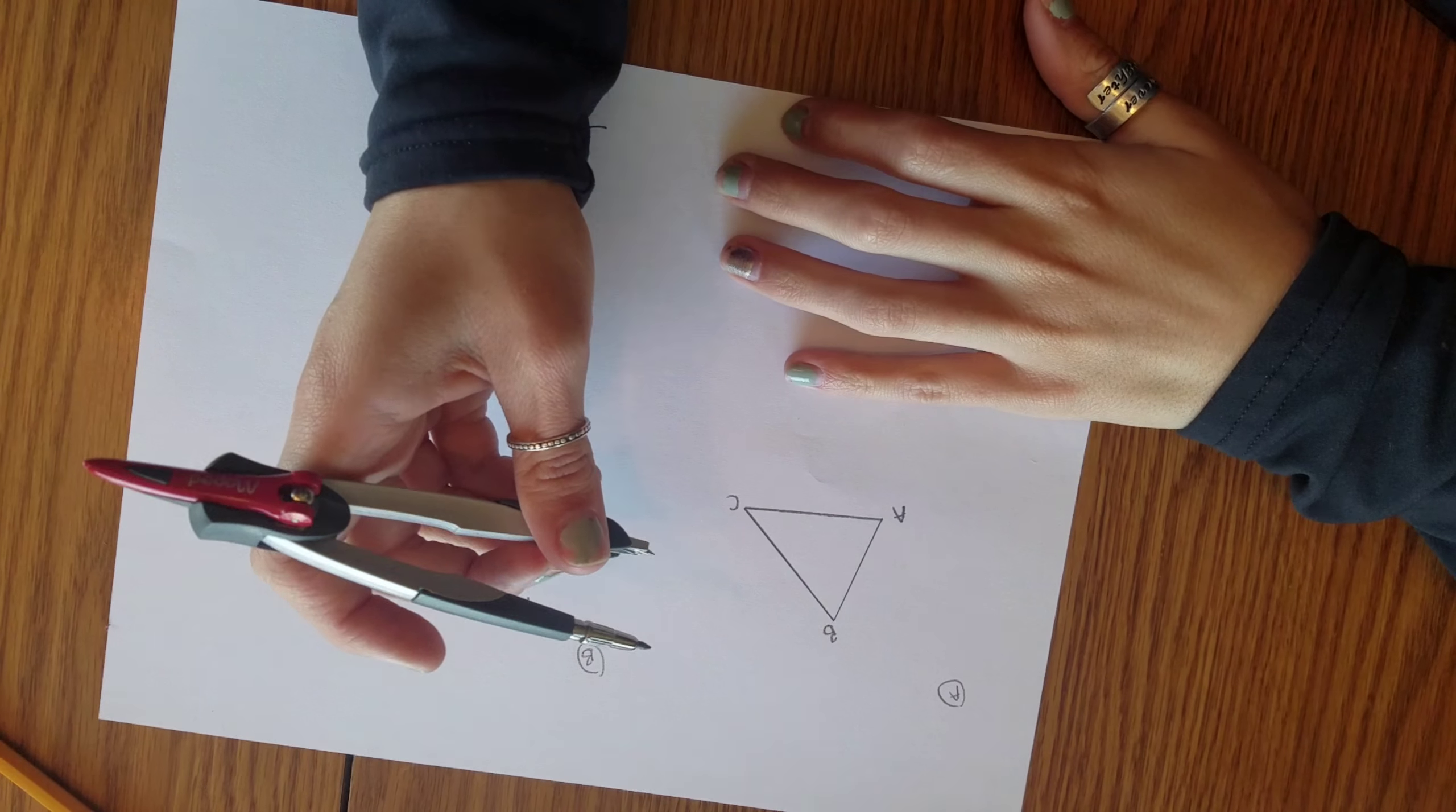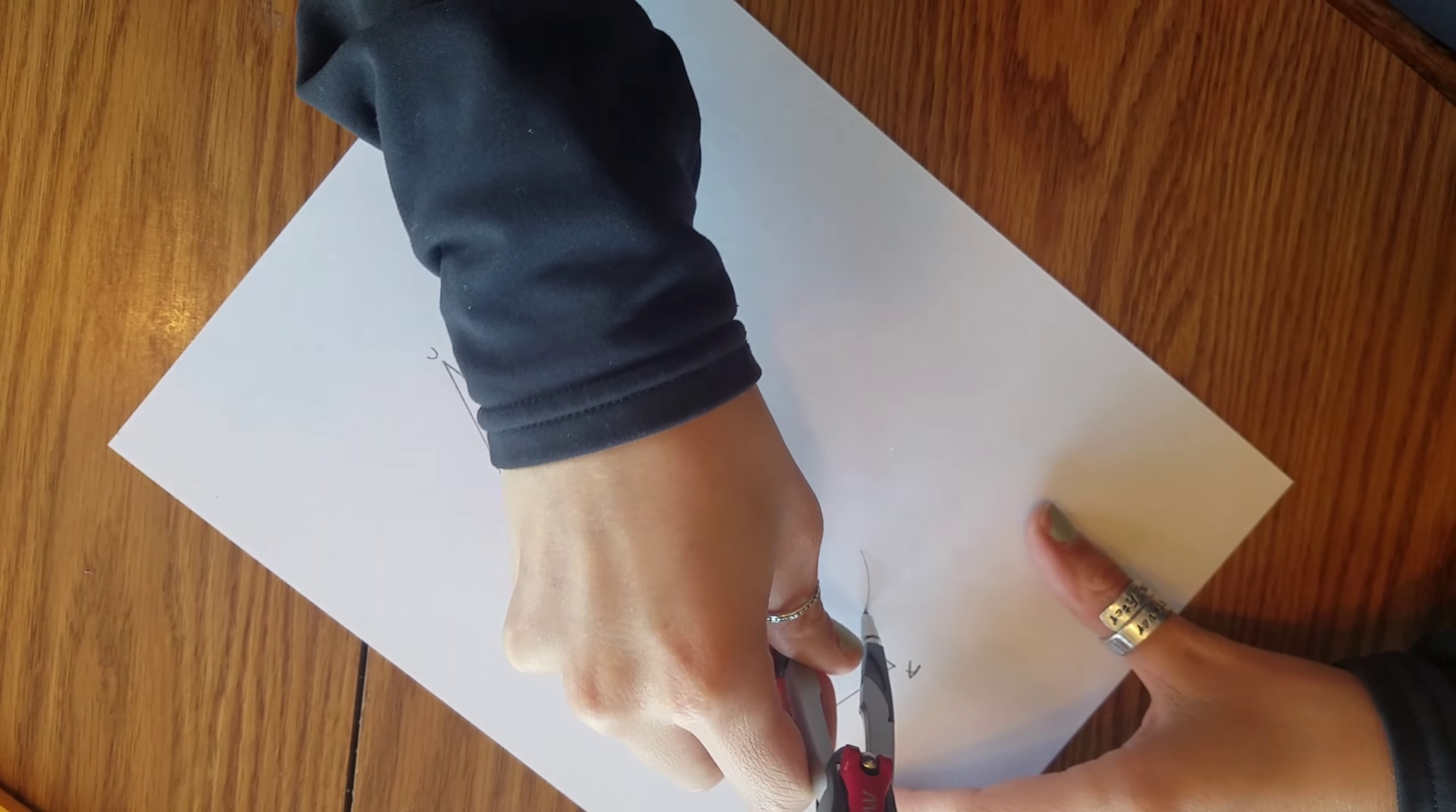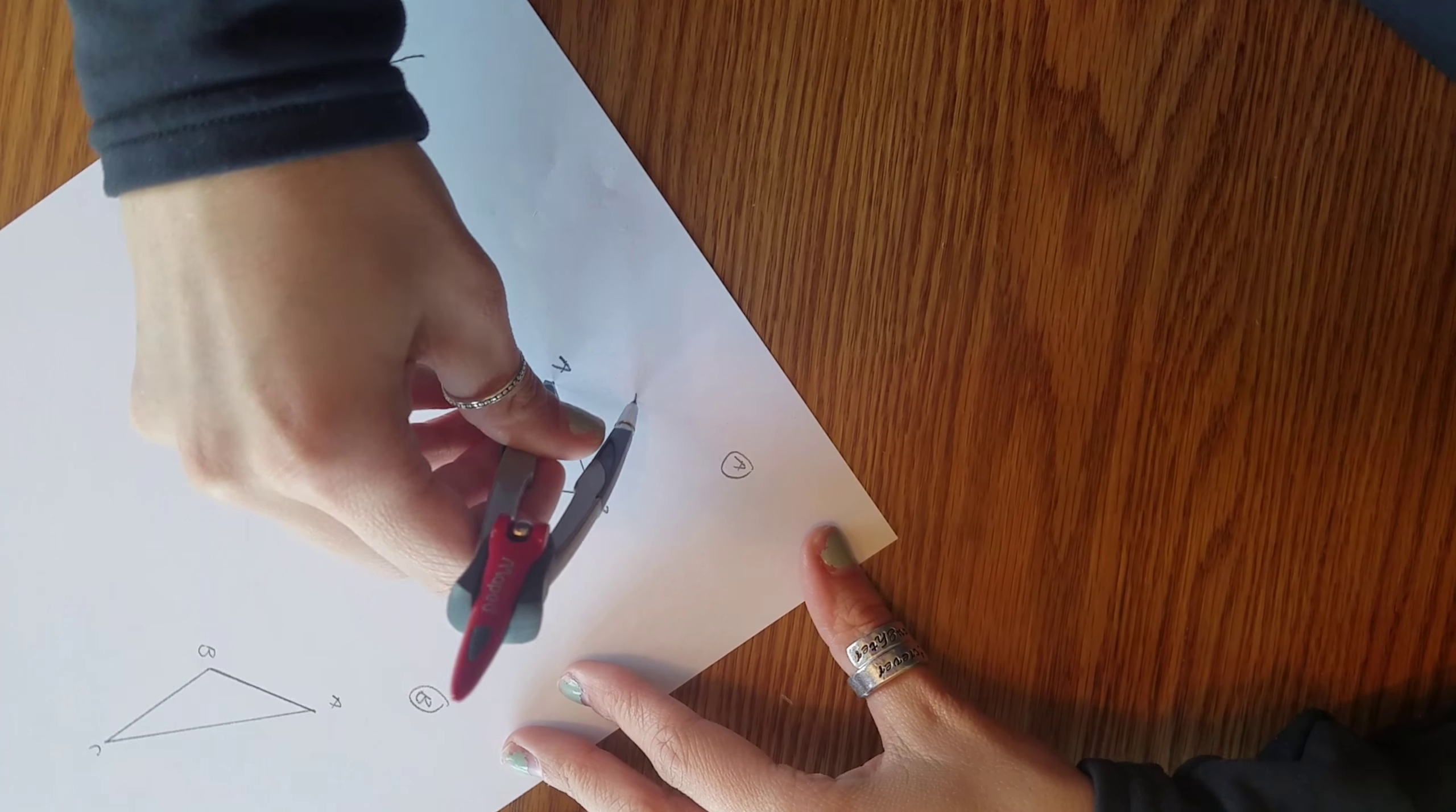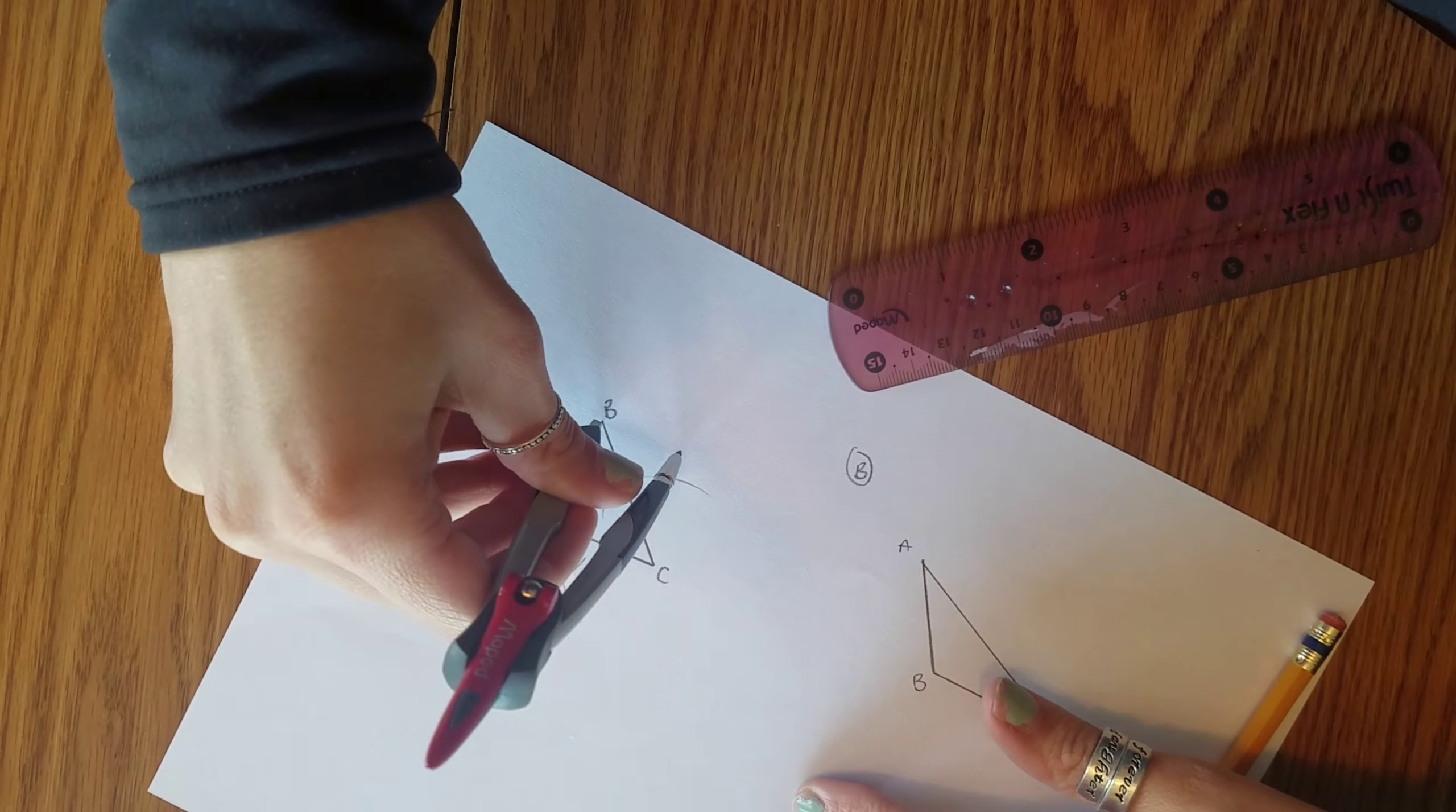So first we're going to make two arcs, or three, just in case, from each vertex, and make sure that they're all more than half the distance. We're going to draw lines so that we can know where they intersect. What we are doing is trying to find the perpendicular bisectors of the sides.